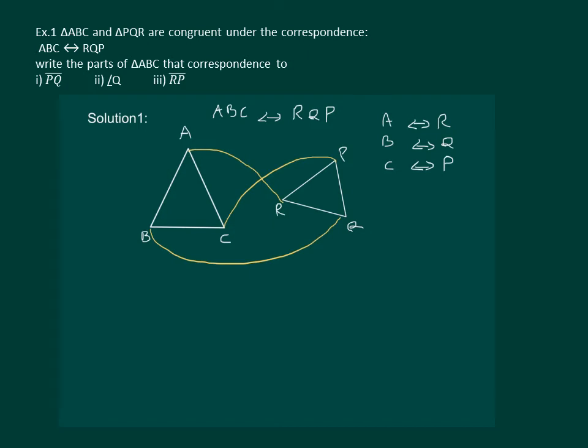Now let us try to answer the first part of our question. We have to find the side that corresponds to the line segment PQ. Clearly, PQ will correspond to CB. So we can write PQ corresponds to line segment CB.